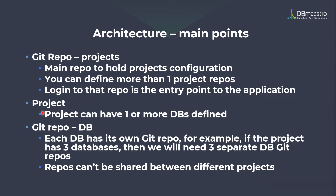Each project that you create in a source control application can have multiple databases in it, but you need to make sure that each database has its own git repository. For example, if the project has two databases, DB1 and DB2, each of these databases will have their own git repository.